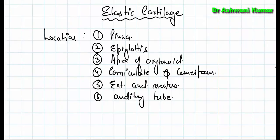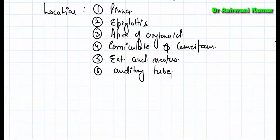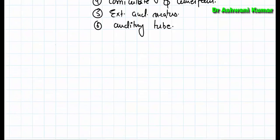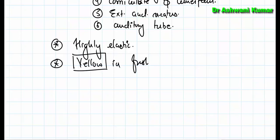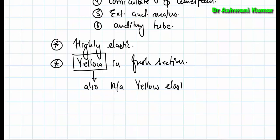As the name suggests, elastic cartilage is highly elastic in nature. In fresh sections they appear yellow, and that is why they are also known as yellow elastic cartilage.